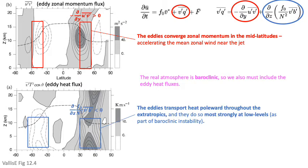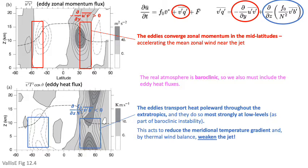Positive values mean poleward heat transport and negative values mean southward heat transport. In both hemispheres, the eddies transport heat poleward throughout the extratropics, doing so most strongly at low levels — really part of baroclinic instability. As we talked about in class and in your tank experiments, these extratropical eddies move warm air poleward and cold air equatorward, transporting heat poleward. What's remarkable is this heat transport actually acts to reduce the meridional temperature gradient, and by thermal wind balance, it should actually weaken the jet.